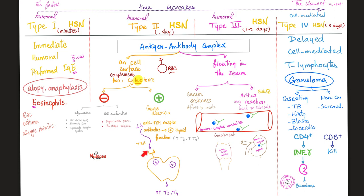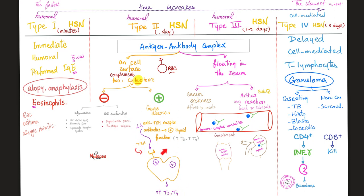Antibodies can also stimulate the target — and this happens in only one case: Graves' disease. These antibodies bind to the TSH receptor and stimulate it, just as TSH would, telling the thyroid gland to secrete tons of thyroid hormone. This is unusual behavior for antibodies, which are normally weapons of destruction. That's why in the past, some classified this as type 5 hypersensitivity.